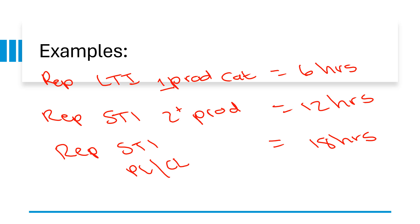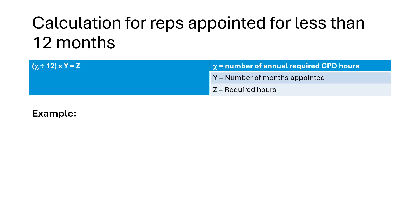But then this is RE, so we have to complicate things. Let's look at a calculation for a representative that has been appointed for less than 12 months, or had to comply with CPD requirements for less than 12 months. For example, if halfway through the year you finish all your qualifications — product-specific training, class of business training, RE5 requirements, phase-recognized qualification — and now CPD becomes a requirement for you. But you were not there for the entire cycle, so you qualify for a discount on the amount of hours required.